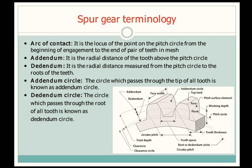Next is addendum. It is the radial distance of the tooth above the pitch circle. In the figure, there is a dotted circle at the top of the gear, and the radial distance from the pitch circle up to that topmost circle is known as the addendum.